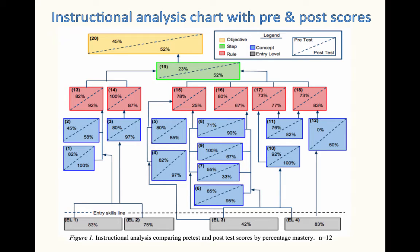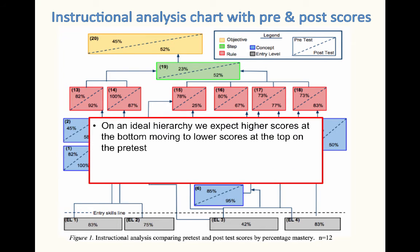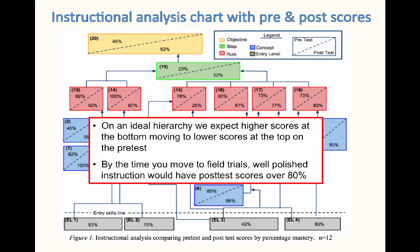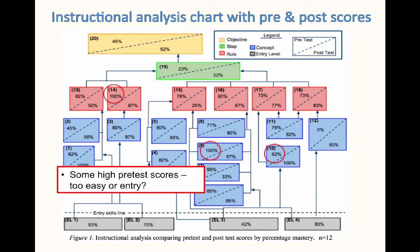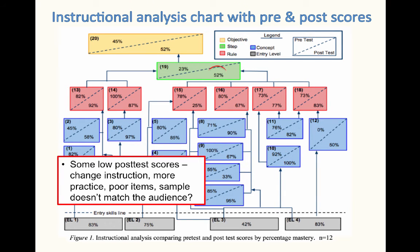This is an instructional analysis chart with pre- and post-test scores. It allows you to take a look at how accurate your hierarchy chart is. On the ideal hierarchy, we expect the higher scores at the bottom, moving to lower scores at the top on the pre-test. By the time you move to field trials, well-polished instruction would have post-test scores over 80. These entry-level items are not very high — were they poor items or do we need these objectives in our instruction? There are some very high pre-test scores — are they too easy or are they entry behaviors? Notice a lot of these post-test scores are very low. We have to ask: do we need to change the instruction, provide more practice, or are they just poor test items? Or perhaps the sample doesn't match the audience. You really have to be a detective — a lot of times people default to it's a poor test item when that may not always be the case.